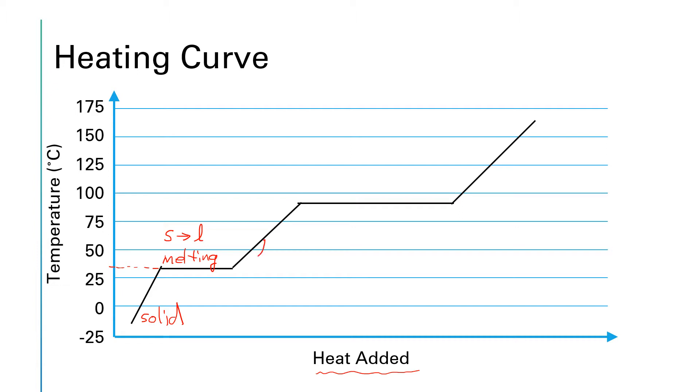So this next sloped portion is where we have the liquid phase and as you continue adding energy the temperature rises until we hit this next horizontal plateau and at this next horizontal plateau every little bit of energy that you add instead of changing the temperature causes some of the liquid molecules to turn into a gas.